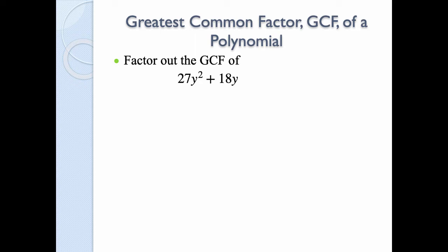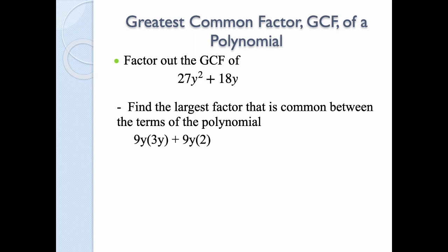In this case we have 27y² and 18y. We want to find the largest number that divides evenly into 27 and 18, and the largest variable that divides evenly into y² and y. Between 27 and 18, the largest number that divides out of both evenly is 9, and the largest variable is just a y. When we look at variables, we look at the lowest exponent of the common variables.